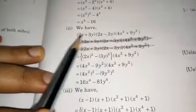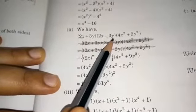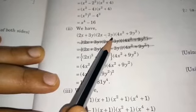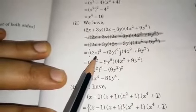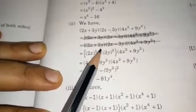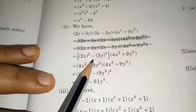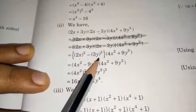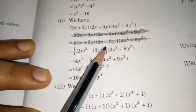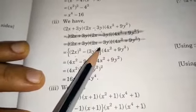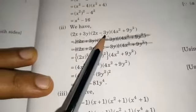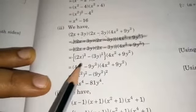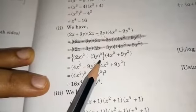So how do we continue with this using the identity? This should be written as a² - b². So a² — a is 2x, so (2x)² — minus b², b is 3y, so (3y)². So we have something which looks like (a + b)(a - b), so we write it out as a² - b².